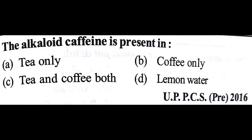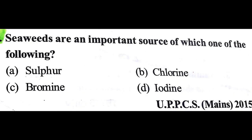The alkaloid caffeine is present in both tea and coffee — answer is C. Seaweeds are an important source of iodine and are used to treat diseases caused by iodine deficiency, so our answer is D: iodine.